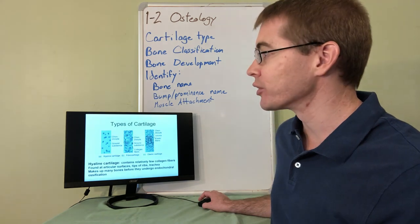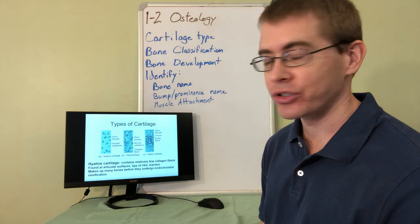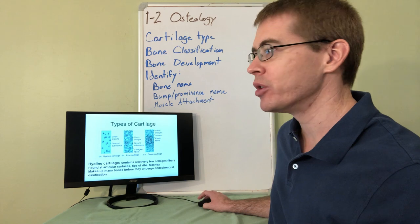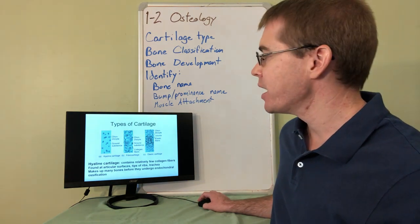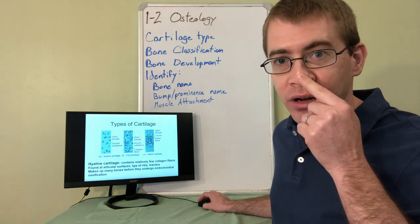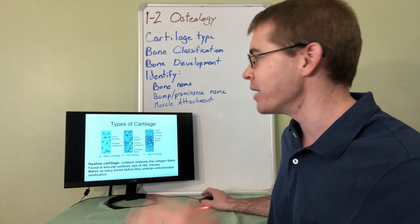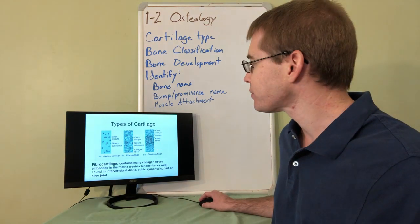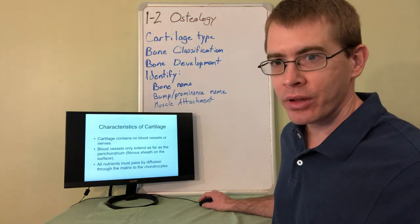So there are many different types of cartilage. Hyaline cartilage, the first image on the left, is the most common type. It's found in articular surfaces. But there are other types of cartilage: fibrous cartilage and elastic cartilage. Elastic cartilage, particularly in the ear and nose, gives that firm shape but can also move and spring back because it has elastic fibers in it.